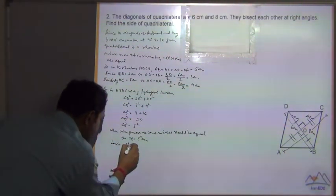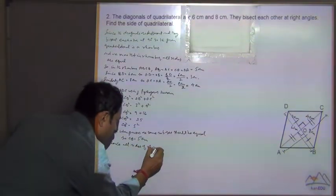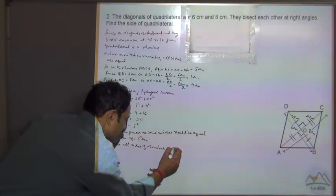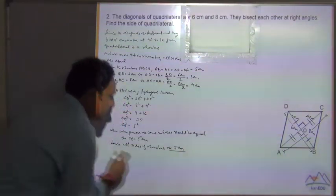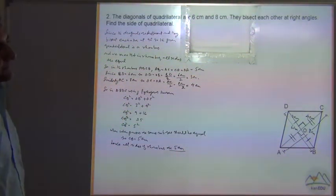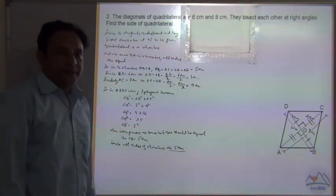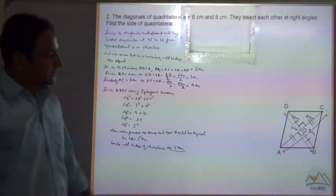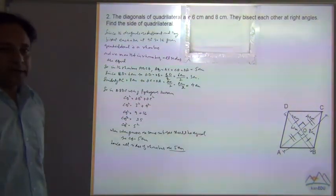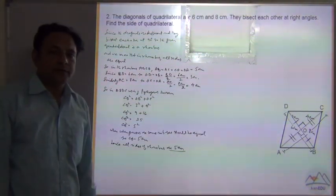Hence, all sides of rhombus are 5 centimeters. So this is the way we can calculate. We have to remember the properties of the quadrilateral, then only we can solve the questions.